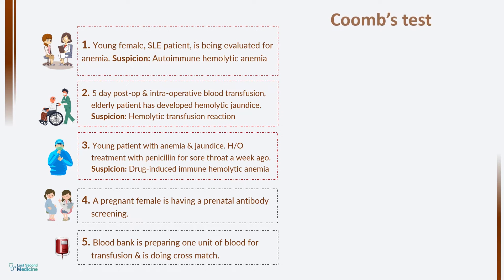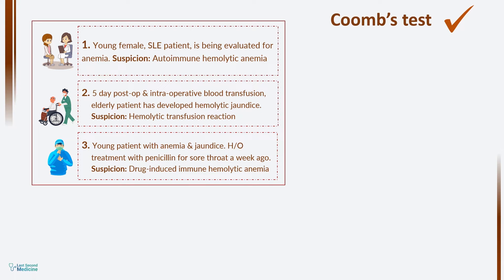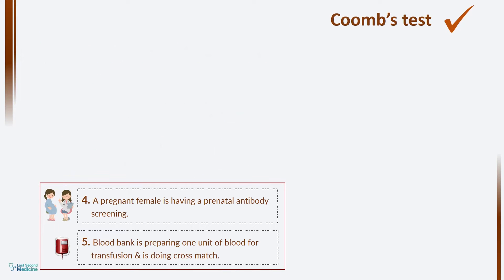In all these scenarios, Coombs test is used. If you look closely, the first three scenarios are discussing patients who have symptoms, and we want to see the presence of immune hemolysis in them. While in the last two cases, we want to screen a mother and a blood recipient for the presence of antibodies — which, if present and crosses the placenta in case 4, can potentially cause immune hemolysis in the fetus, leading to hemolytic disease of the fetus and newborn. And if antibodies are present in the recipient's plasma in case 5 and he receives incompatible donor blood, immune hemolysis of donor red cells will occur, causing transfusion reaction.